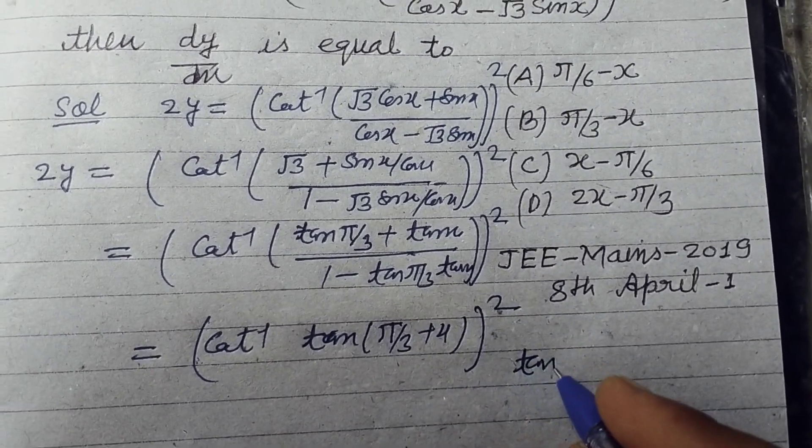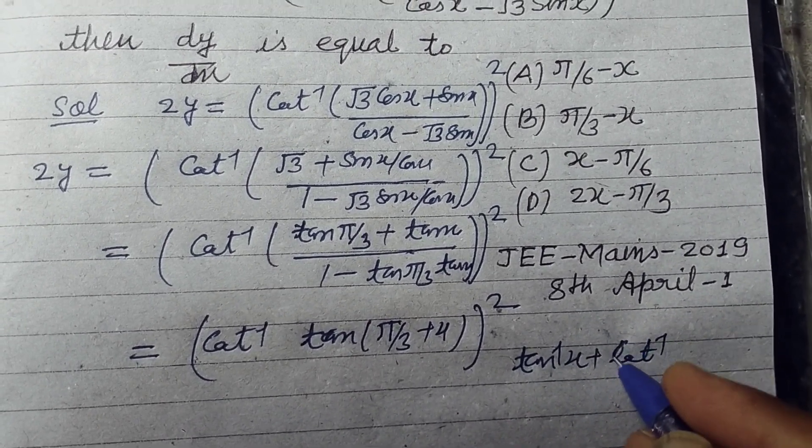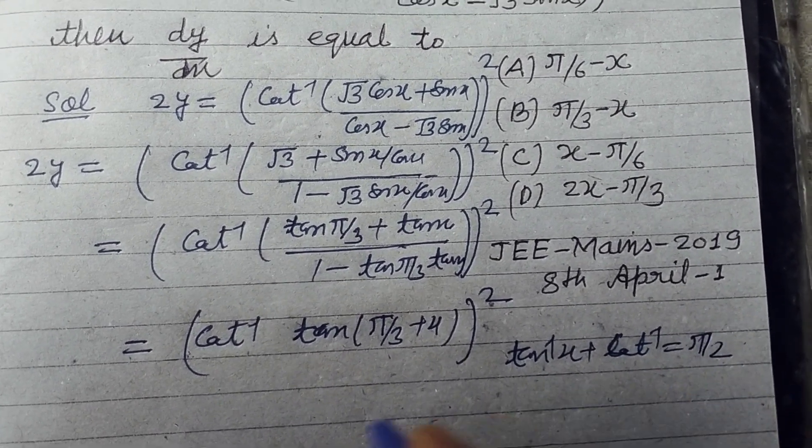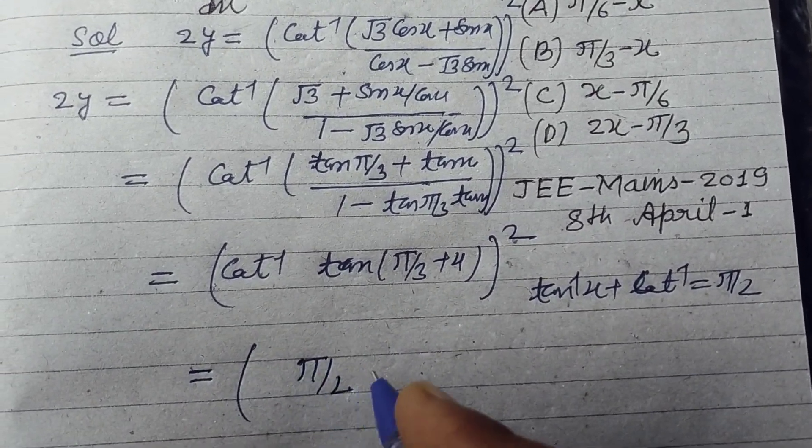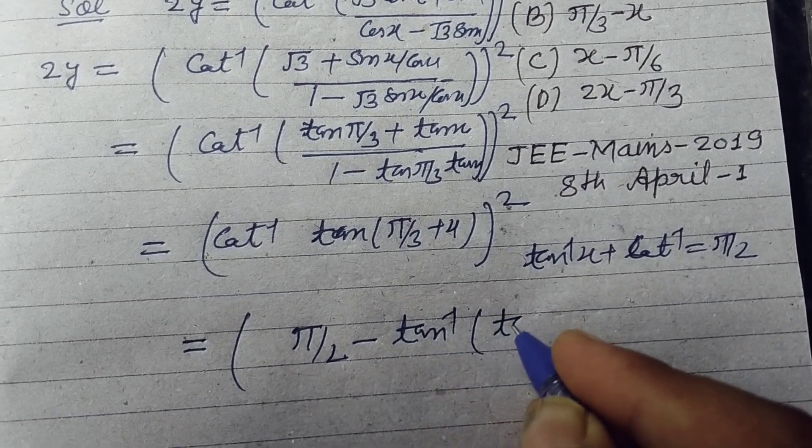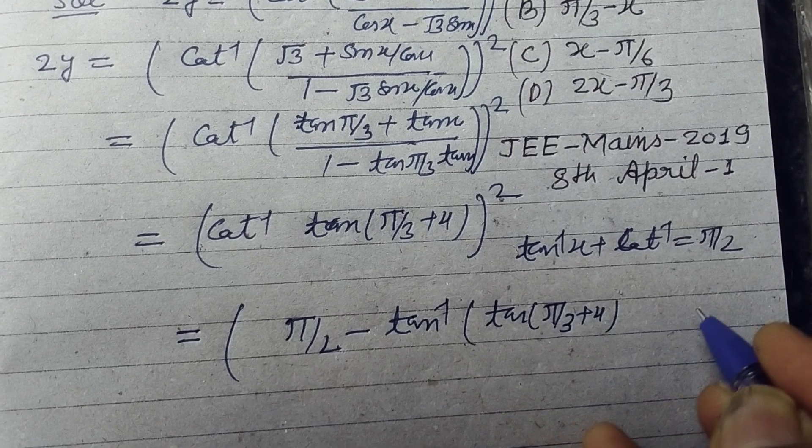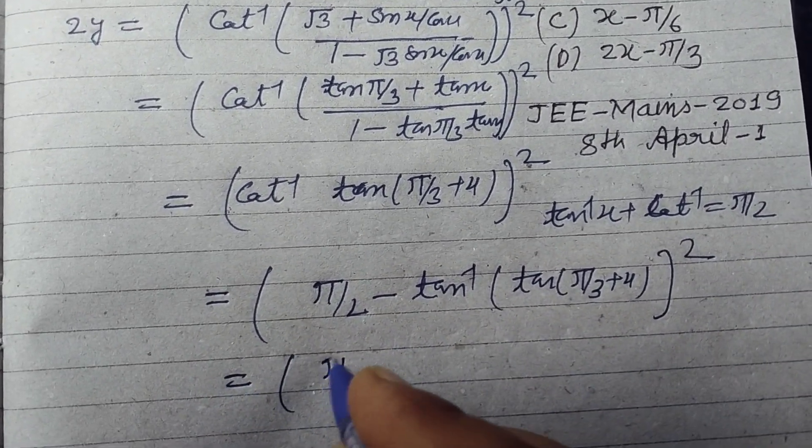Now we know that tan inverse x plus cot inverse x equals π/2. So putting this equal to π/2 minus tan inverse tan of π/3 plus x, whole square.